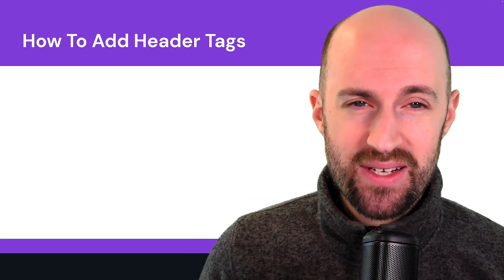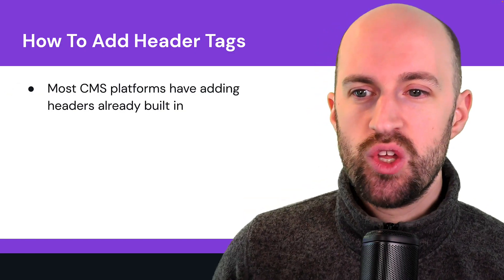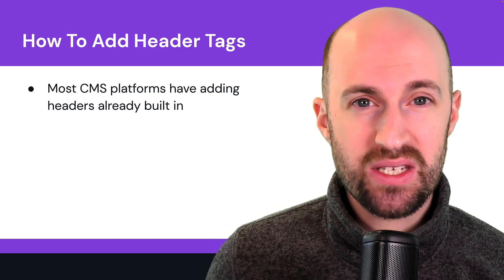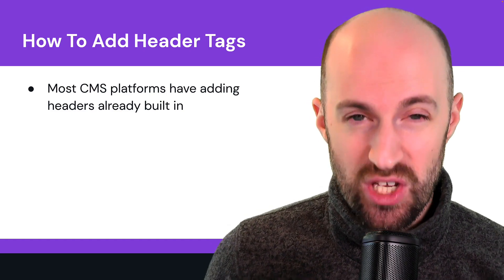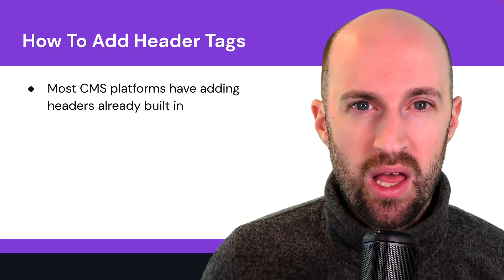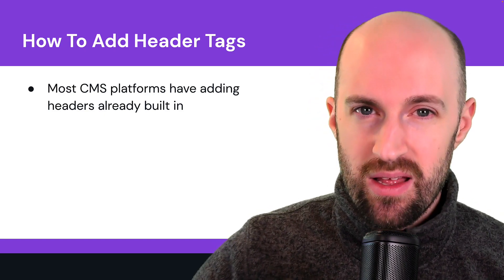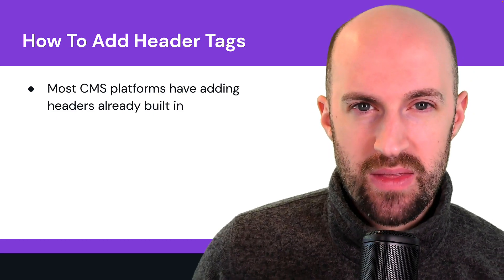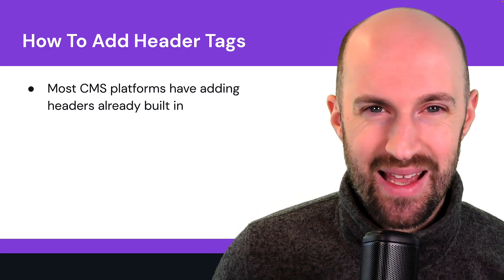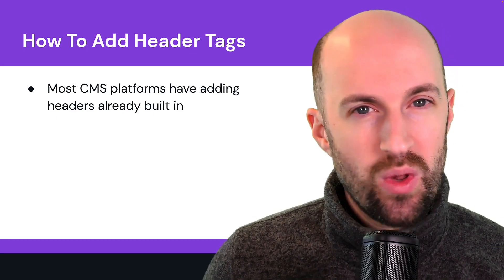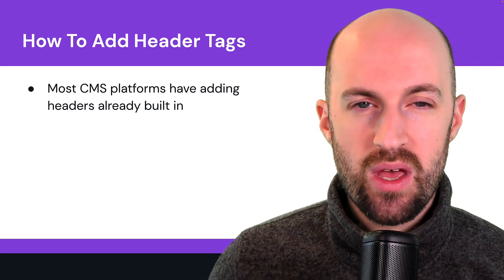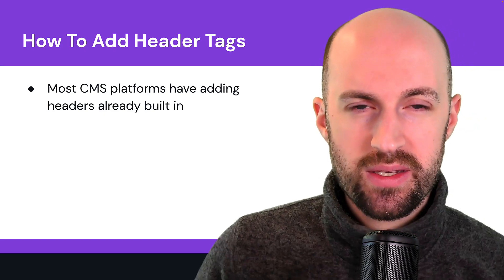So how do you add header tags? Chances are you already have a CMS that has adding headers built in in a visual format — you might not even have to deal with HTML at all. Just realize that heading codes, the H1s, H2s, H3s, all the way to H6s, will give you an option to select which heading level you want.